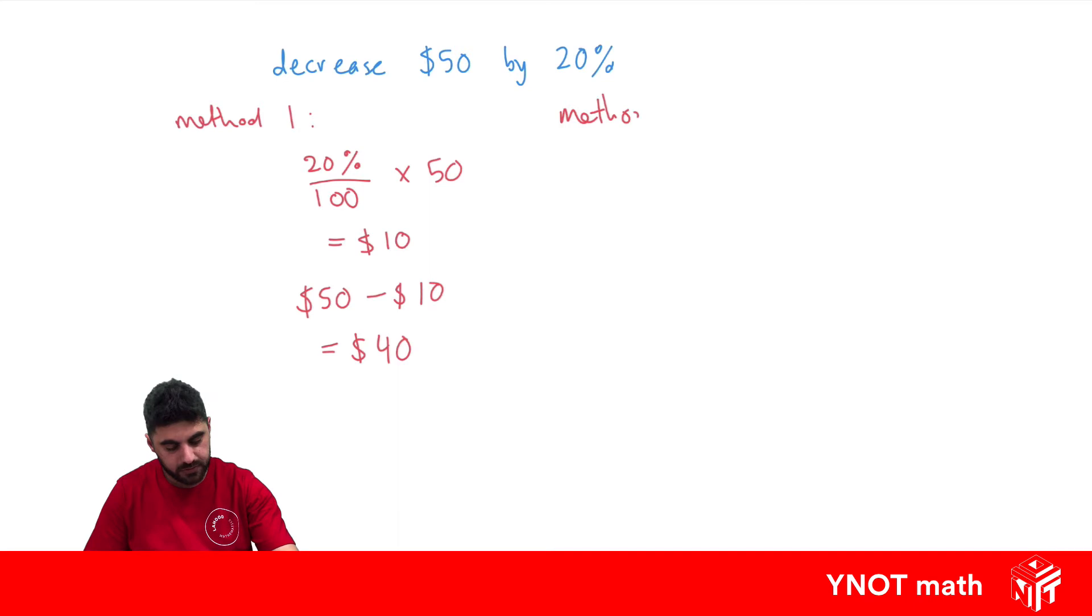Method two, this is the method I use. So we're going to take 100% and we're going to subtract the percent we want to decrease by, which is 20%. This is going to give us 80%. And now we just want to find 80% of $50.